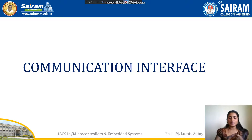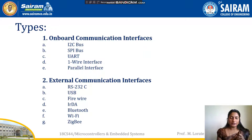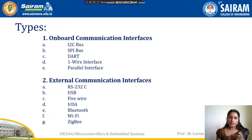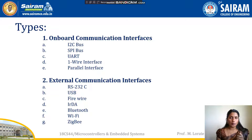Today we are going to see some of the communication interface devices. There are two types: the first is board or device level communication interface, also called onboard communication interface; the other is product level communication interface, also called external communication interface. The onboard communication interface connects all the different components within the embedded device on a PCB (printed circuit board).